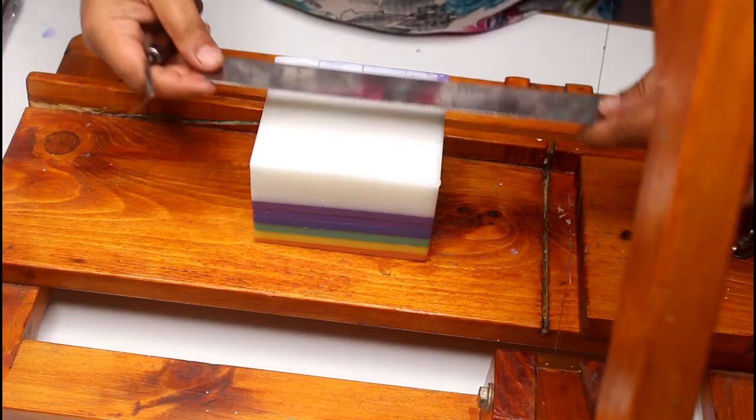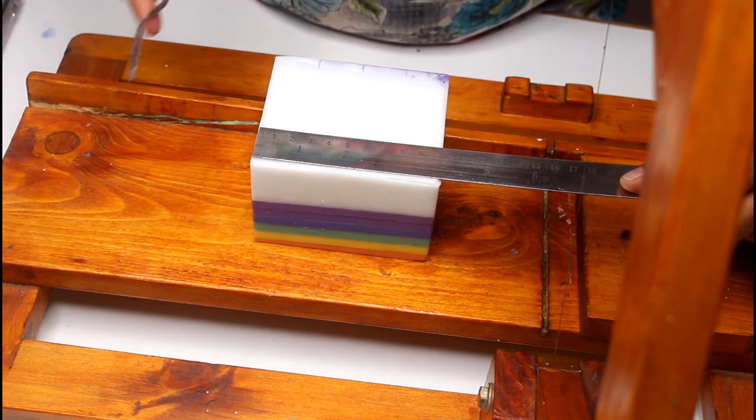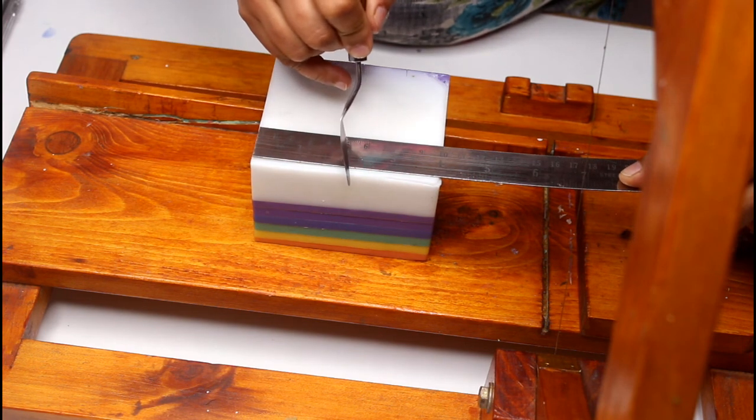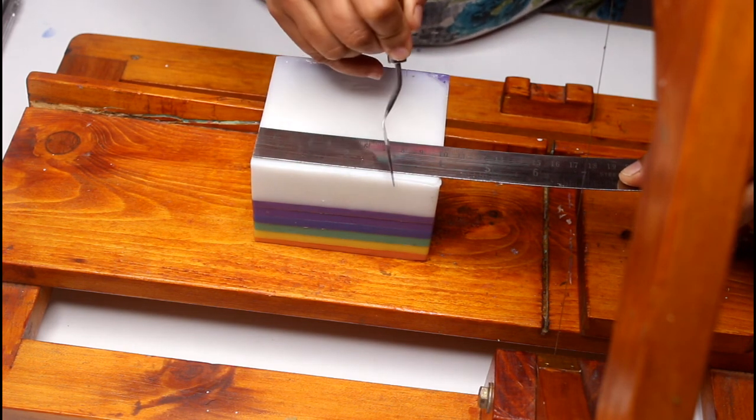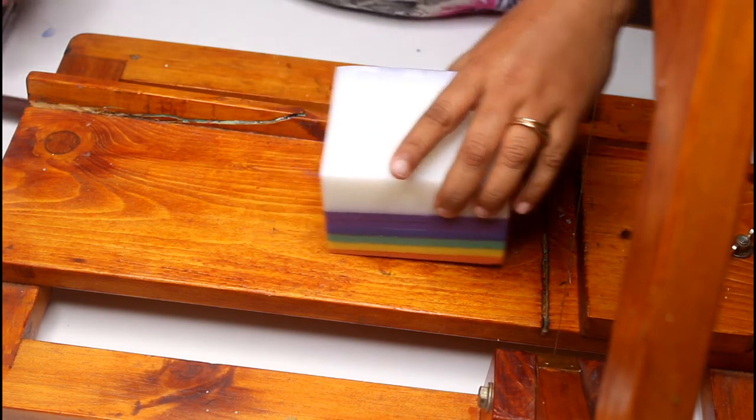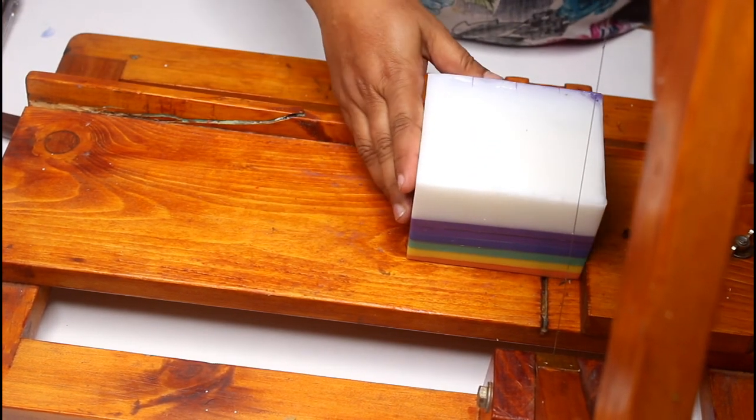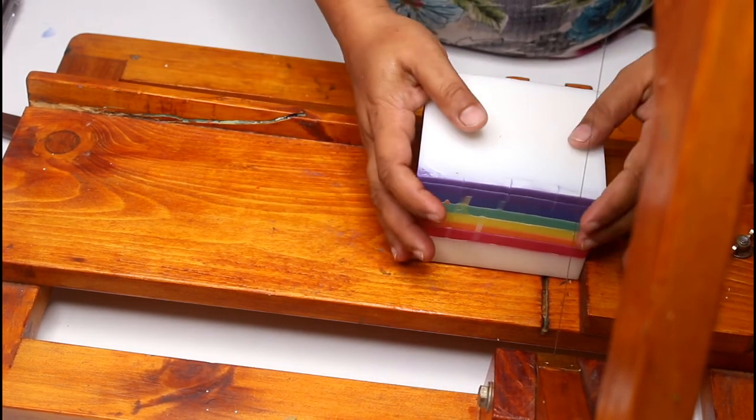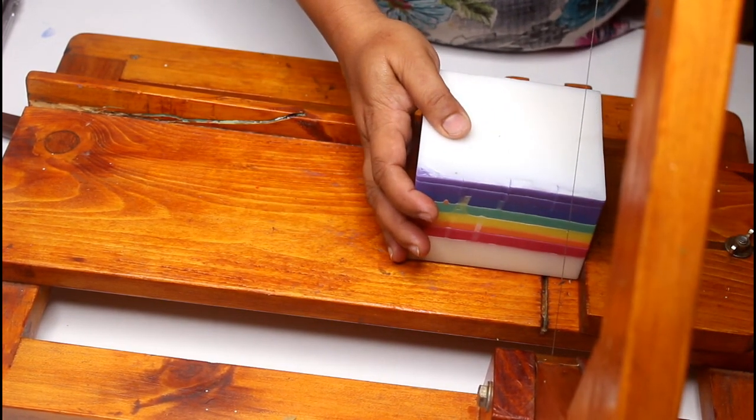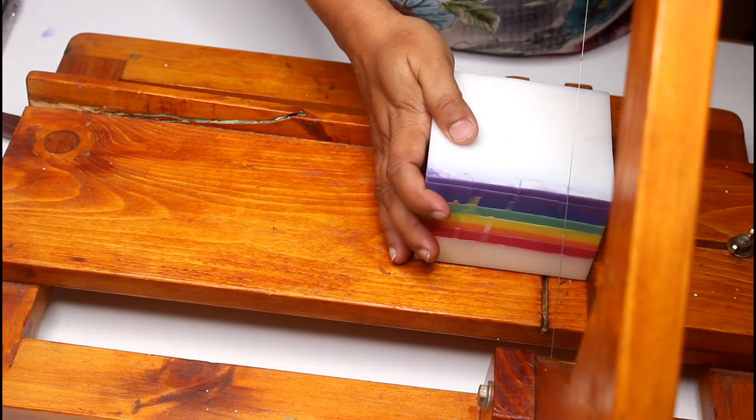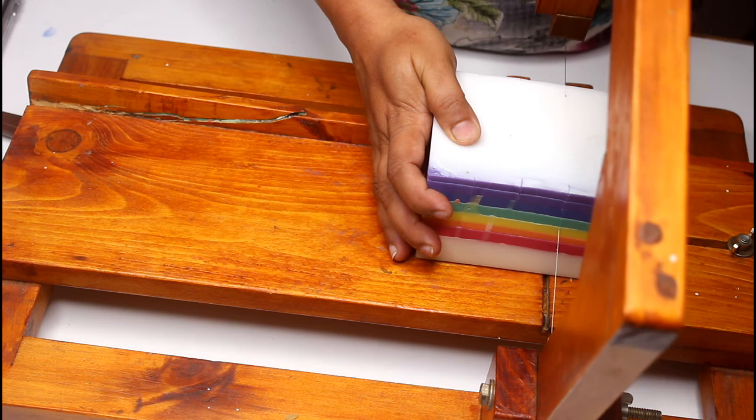Now I'm going to use my scale to mark this. This is a 4-inch loaf, so I'm going to cut it into 1-inch bars for my cutting. And this is a cutter which I sell—if you wish to buy this cutter which cuts even your M&P soap, you can get in touch with me. All the details are in the description box below.